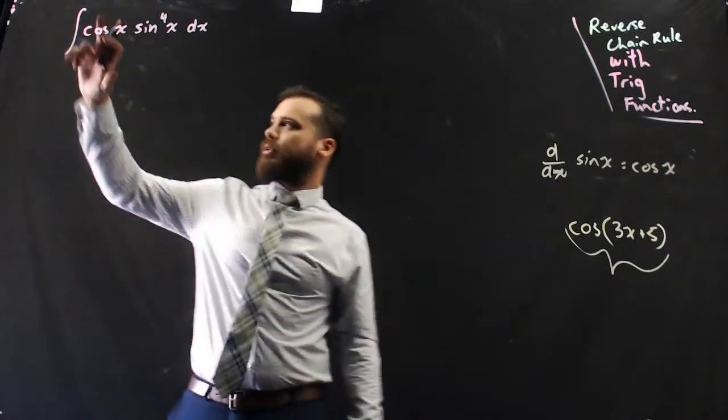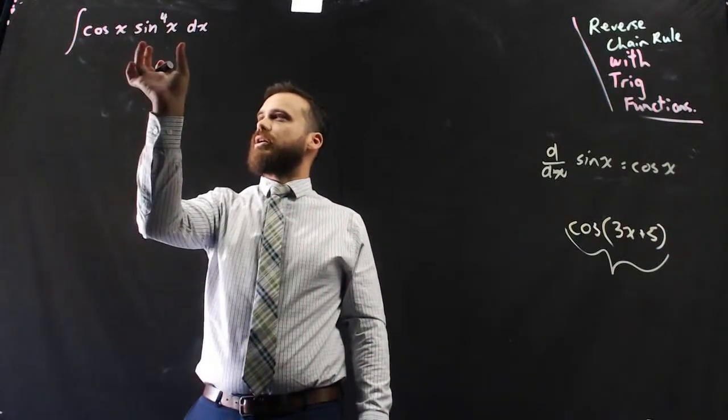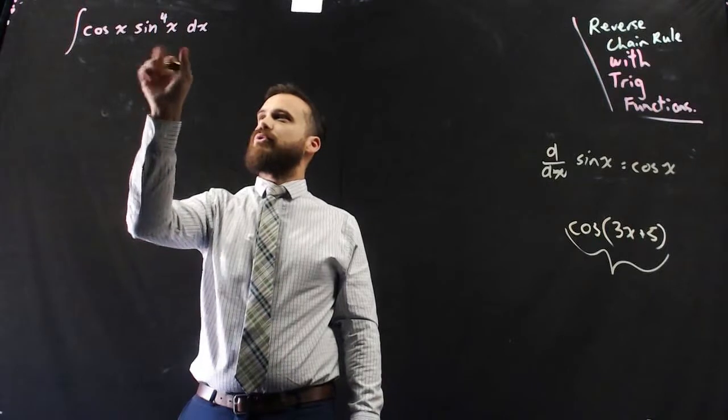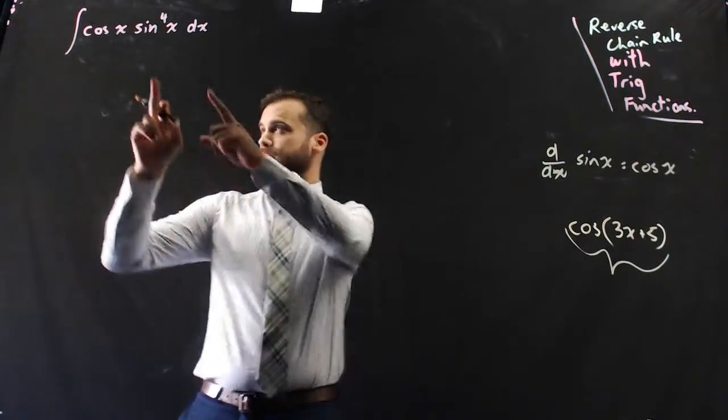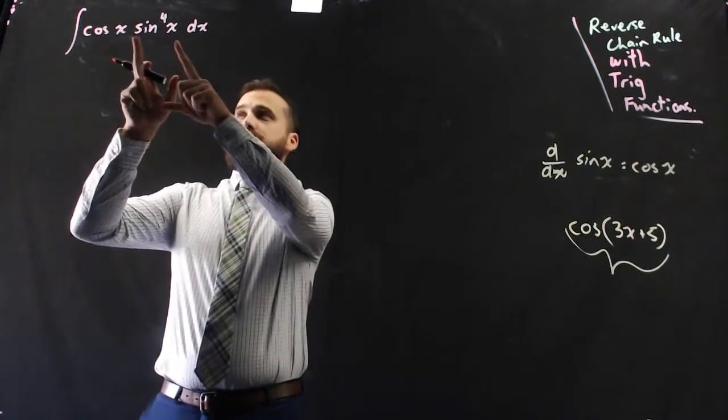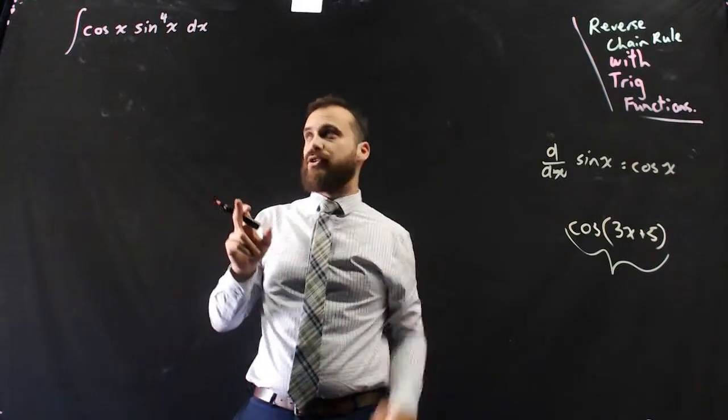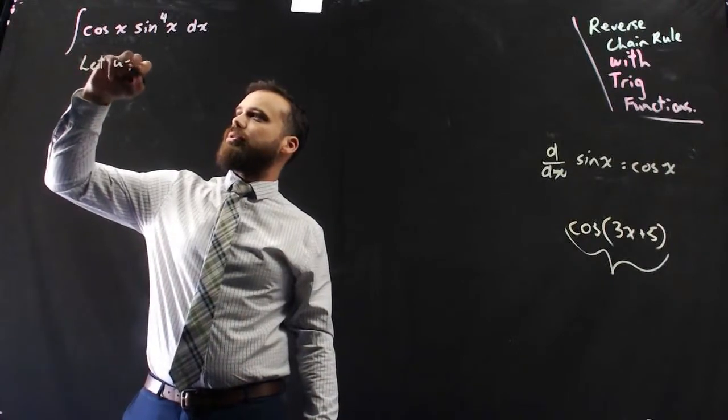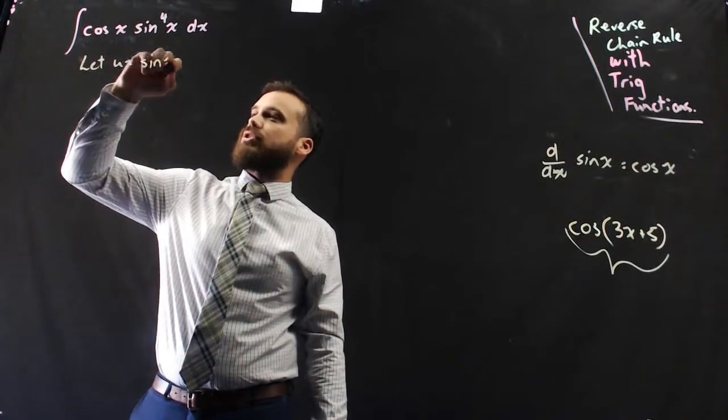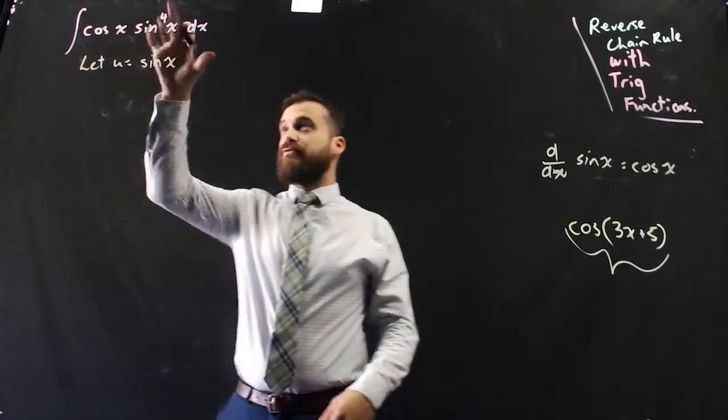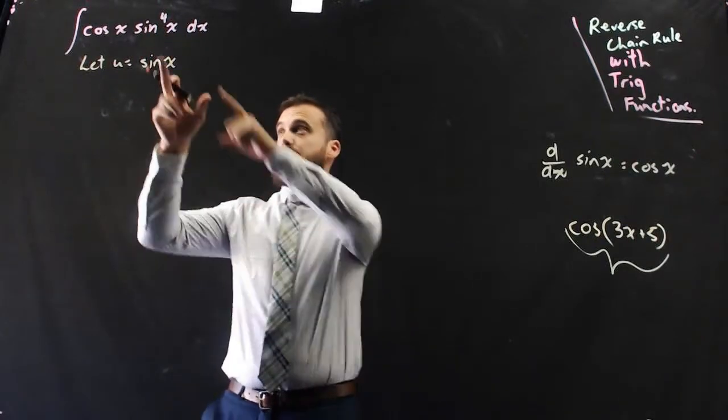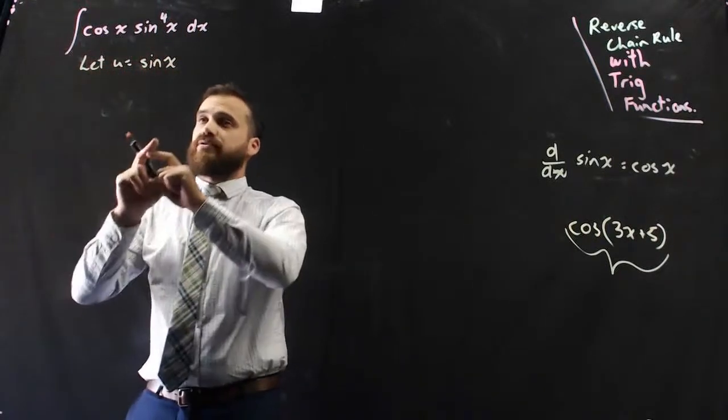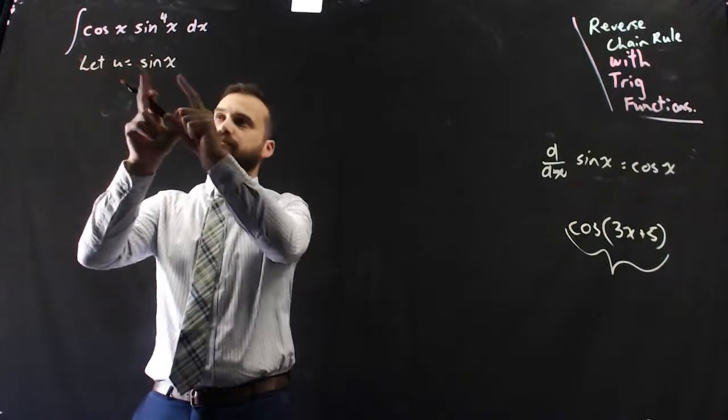So here, the integral of cos x, sin x to the power of 4 with respect to x, this is the derivative of this. So because we see that, it's a reverse chain rule question, we can let u equal sin x. cos x, not sin 4x, but just sin x, because cos x is the derivative of sin x.